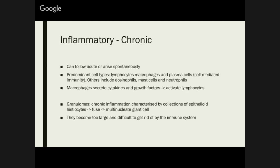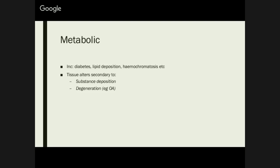Others include eosinophils, mast cells, and neutrophils. Macrophages secrete cytokines and growth factors, and these essentially activate your lymphocytes — which is why lymphocytes are only present in chronic inflammation. This can result in granulomas: collections of epithelioid histiocytes that fuse to form a multi-nucleate giant cell, which can't actually be cleared by the immune system and ends up being deposited around your body. Metabolic causes include diabetes, lipid deposition, hemochromatosis — anything that results in deposits around your body. Your tissue is actually altered secondary to either substance deposition or degeneration; something like osteoarthritis is also considered a metabolic cause.